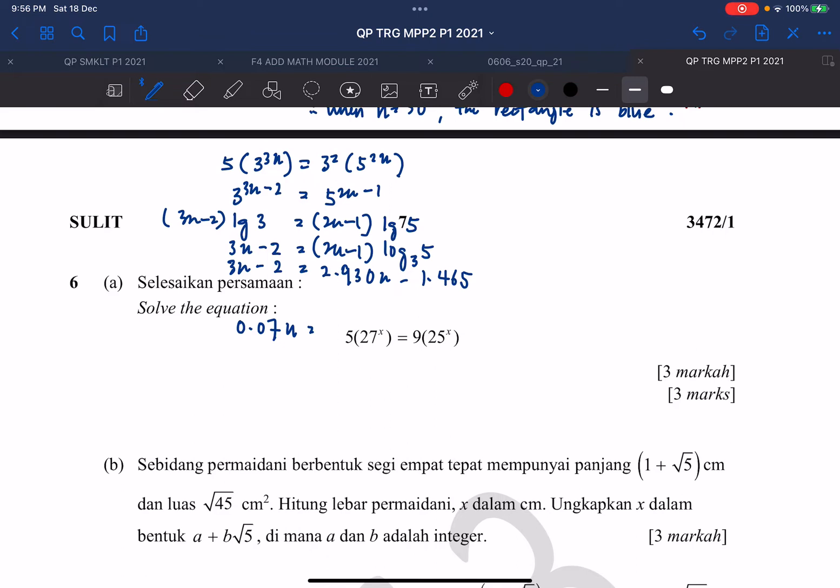Then you move the negative 2 to the right-hand side, plus, so you get 0.535. So x should be 7.643 in this case.